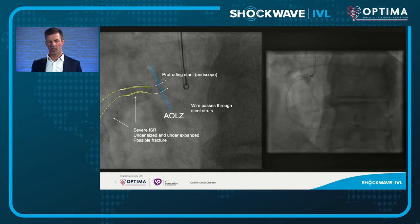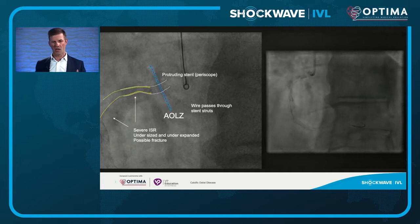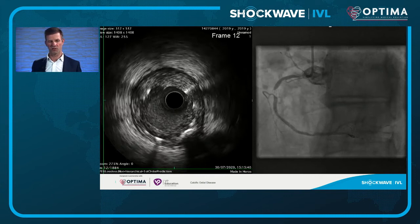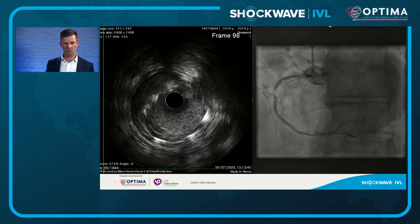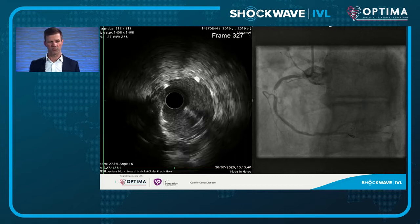On angiographic imaging, we see not only aorto-osteal target lesion failure but also restenosis in the mid vessel at another position of stent overlap — with probable stent fracture there. Intravascular imaging determines the mode of failure, showing stent under-expansion: a small stent in a large vessel. Working further back up the artery, at the stent overlap there is a lot of movement and suspicion of stent fracture on IVUS imaging.